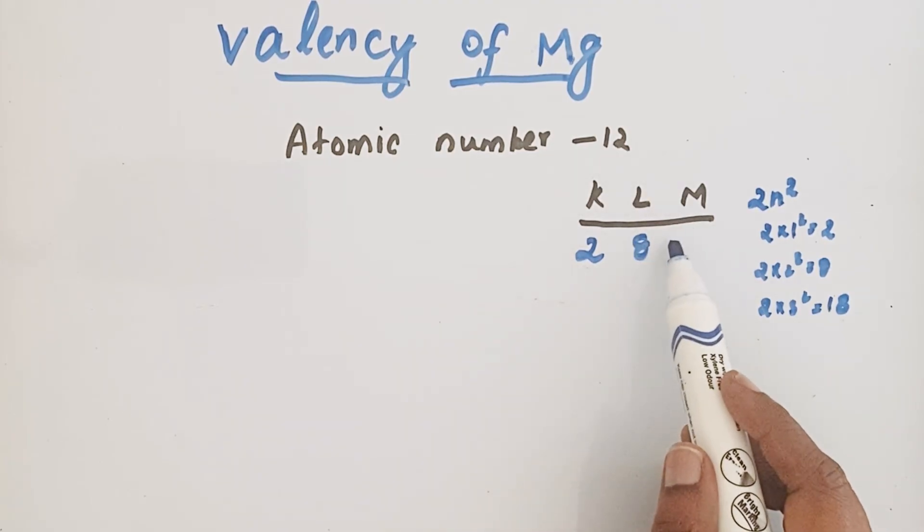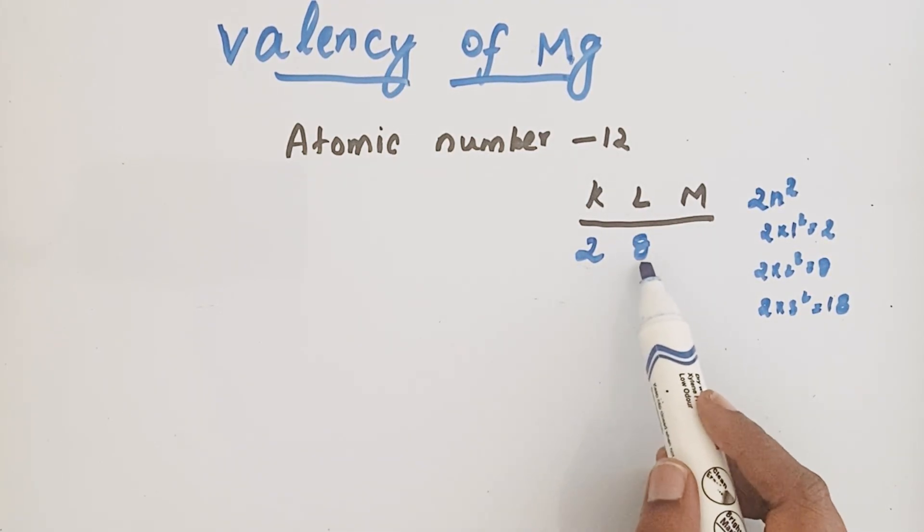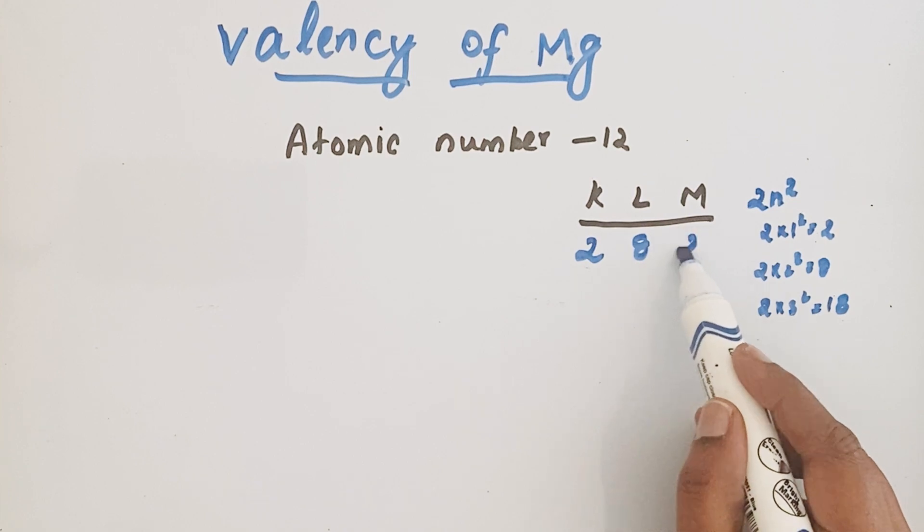If it is 12, there are 12 electrons present. Already we have written 2 and 8, that means total 10. So remaining we have only two electrons. Those two electrons now enter into M shell.